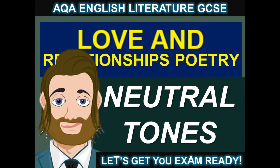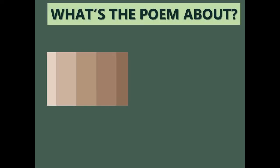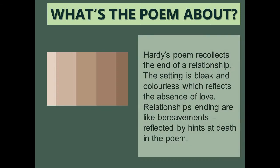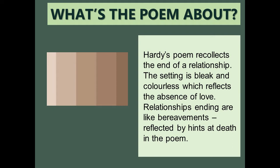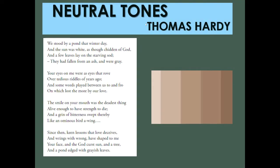My guide to Neutral Tones. We're going to start by thinking about what the poem is about. Hardy's poem recollects the end of a relationship. The setting is bleak and colourless, which reflects the absence of love. Relationships ending are like bereavements, reflected by hints at death in the poem. I'll start with a quick reading and then we're going to think about how we're going to analyse this poem for the exam.